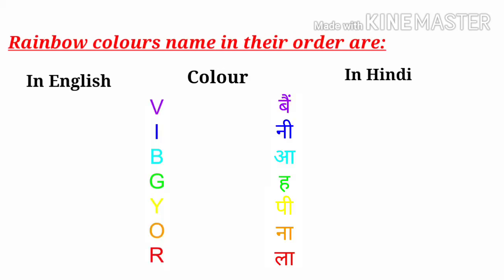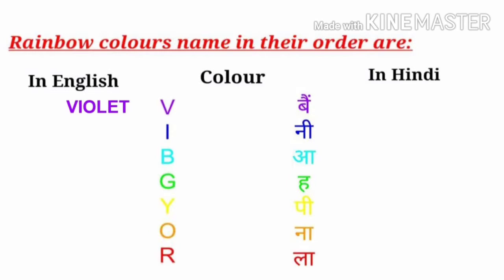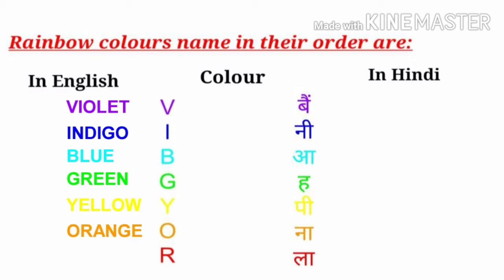Rainbow color names in their order in English are: violet, indigo, blue, green, yellow, orange, and red.